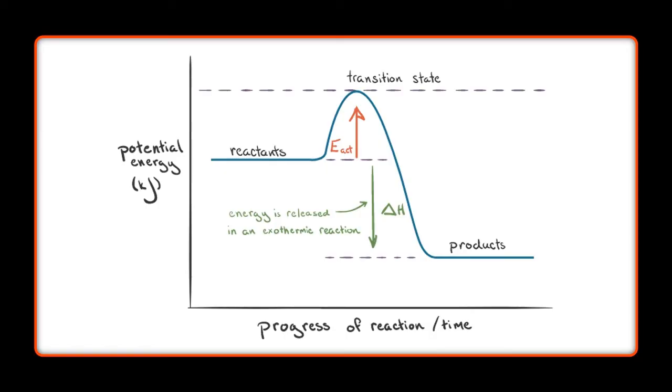And the product that I make, the resulting chemicals have less potential energy stored in them. So an exothermic reaction gives off potential, takes the potential energy of the reactants and gives it off into the environment, into the surroundings.